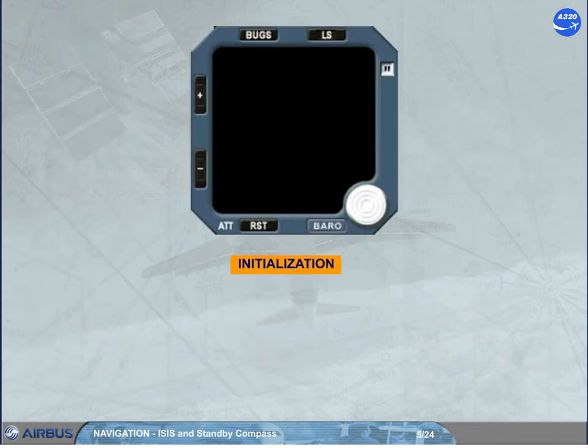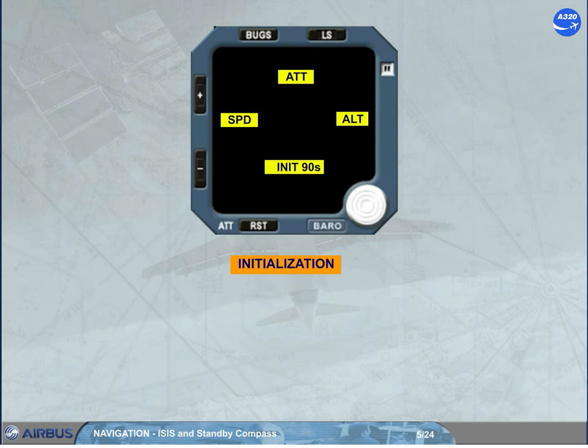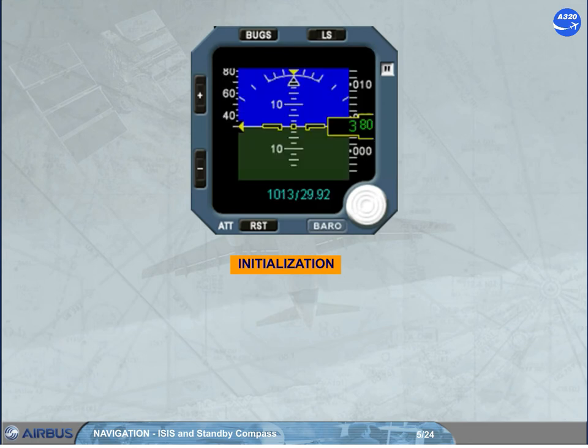As soon as the ISIS is electrically energized, the display shows these flags for a few seconds. Then the brightness of the screen is automatically adjusted by a photosensitive cell, but the crew can manually modify the brightness level by using the plus or minus push button.